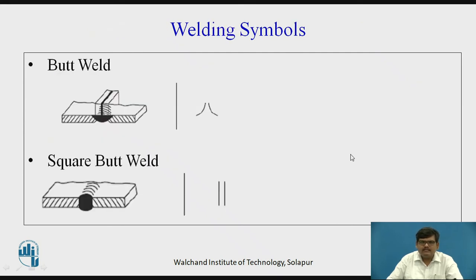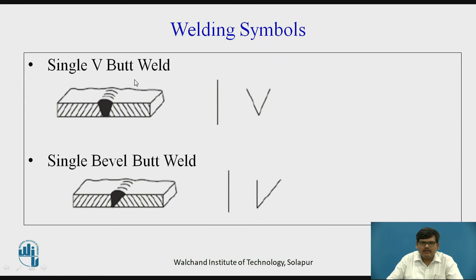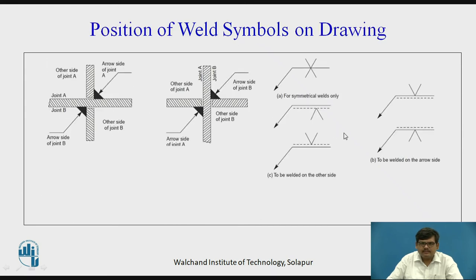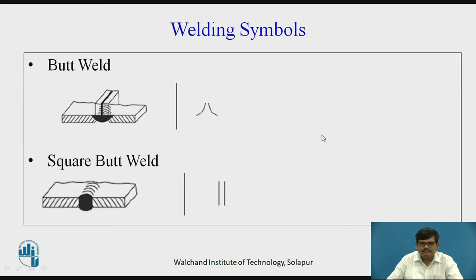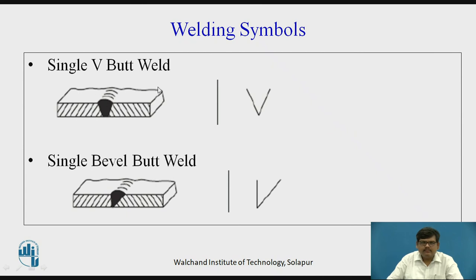This is the butt weld — the most common butt weld with raised edges, and its symbol is shown here. Then we have square butt weld, where the two plates are placed exactly in front of each other with no raised edges; two parallel lines represent the square butt weld. Then we have single V butt weld, where a V is formed in between the two plates — this is called edge preparation. So this is the single V butt weld symbol.